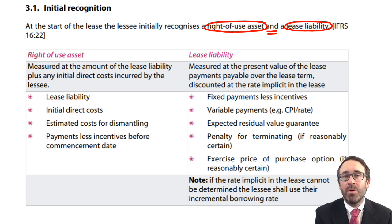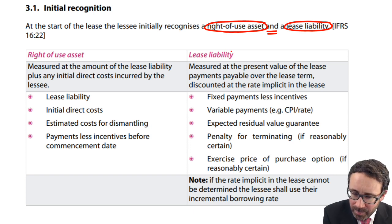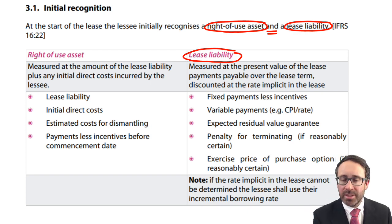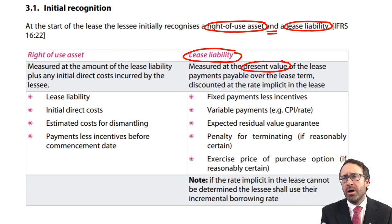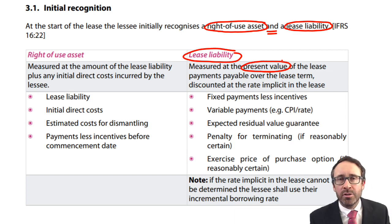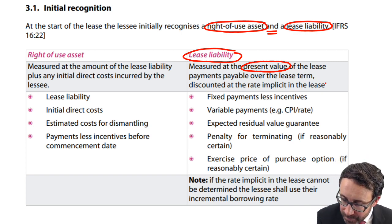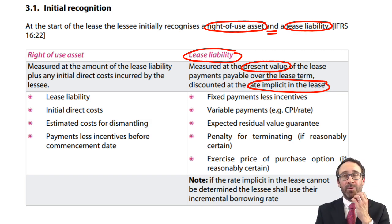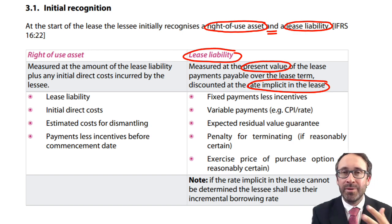The right-of-use asset sits within non-current assets. Looking at the lease liability: you work out the present value — so a little discounting is required — of the lease payments over the lease term. You have payments in year 1, 2, 3, 4, 5, and you discount them back to present value. Often you'll be given the present value of those lease payments. You discount future lease payments at the rate implicit in the lease, which will always be given — you'll never be asked to calculate it yourself.